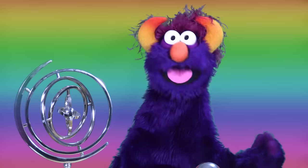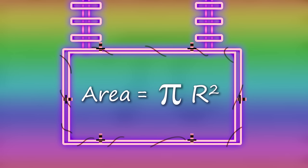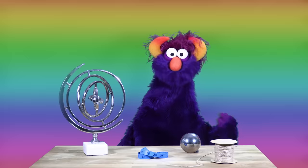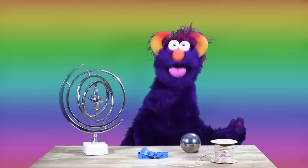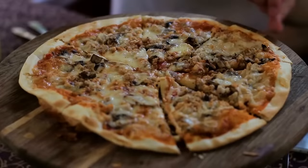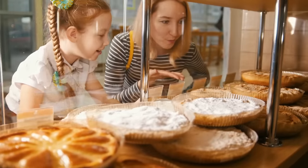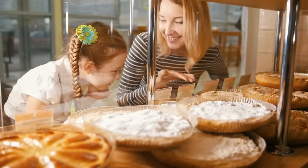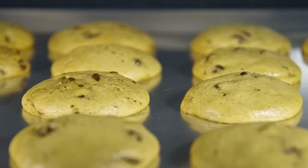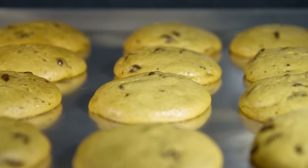Where else do we find pi? It is in the formula to find the area of a circle. The area of a circle is pi r squared. R is the radius, which is half of the diameter. The area is very, very important — that's what tells you how much pizza you have, how much delicious cherry pie you have to eat, how long it will take to eat your yummy cookie!